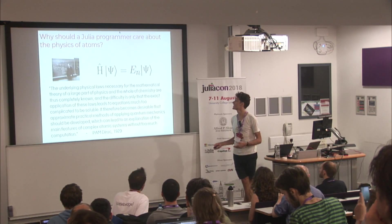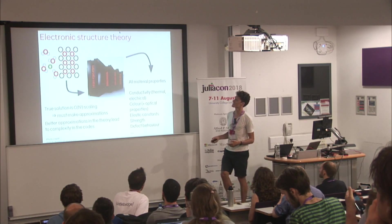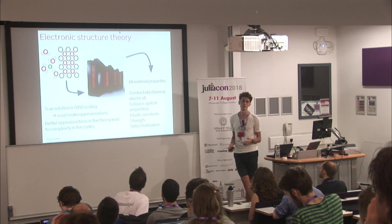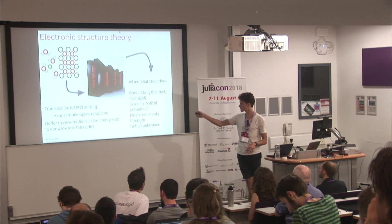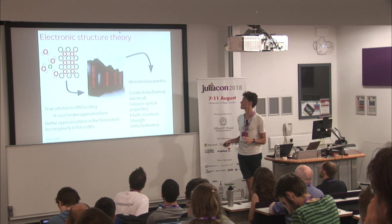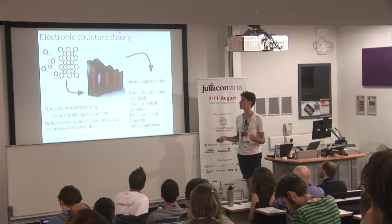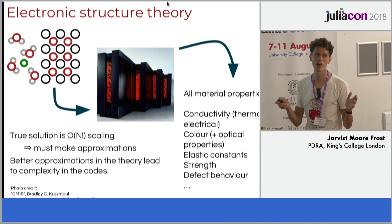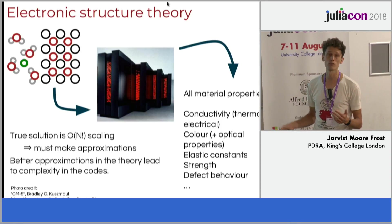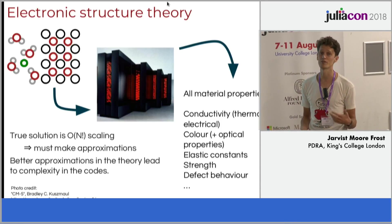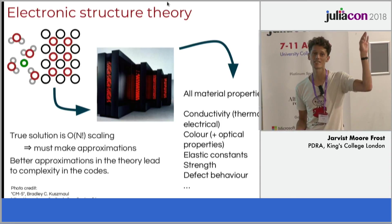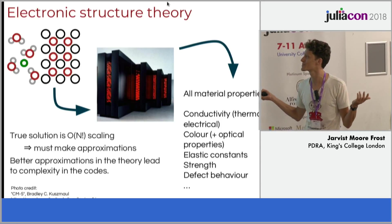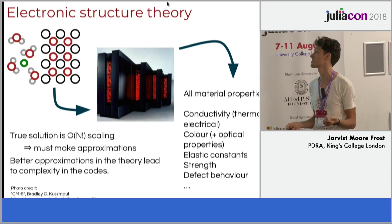Now we have computers, so we can start to solve these things. This whole area is called electronic structure theory — you essentially tell your computer programme a set of atomic locations, put it into a big supercomputer, and potentially predict all material properties. The big problem is that the correct algorithm giving the true solution is factorially scaling. A fleck of dust has about 10 to the 20 electrons, so raised to a factorial power you have something that won't complete before the end of the universe.